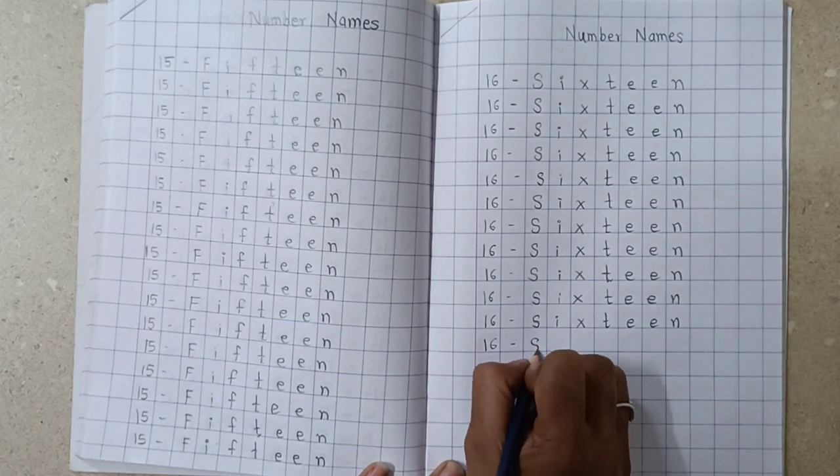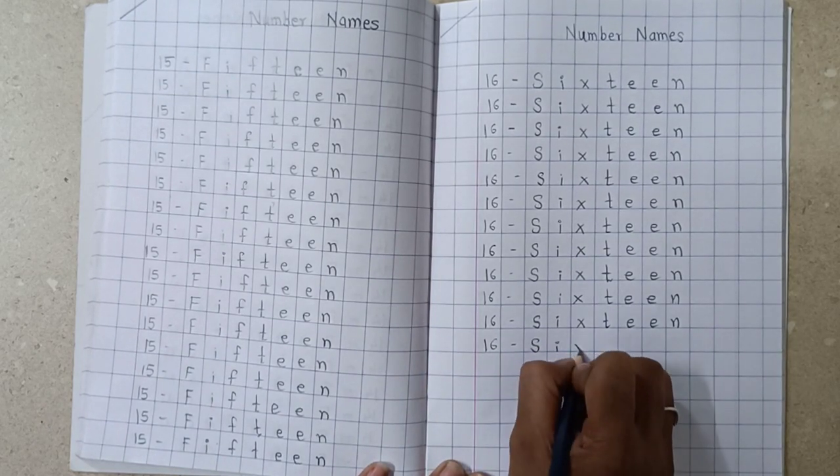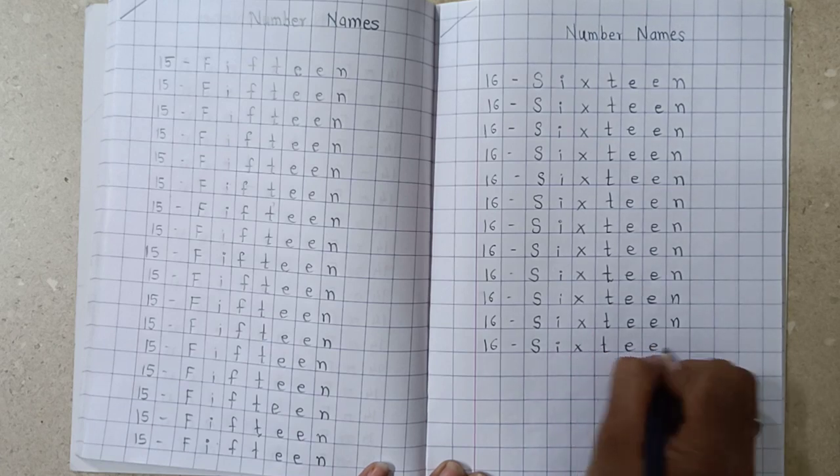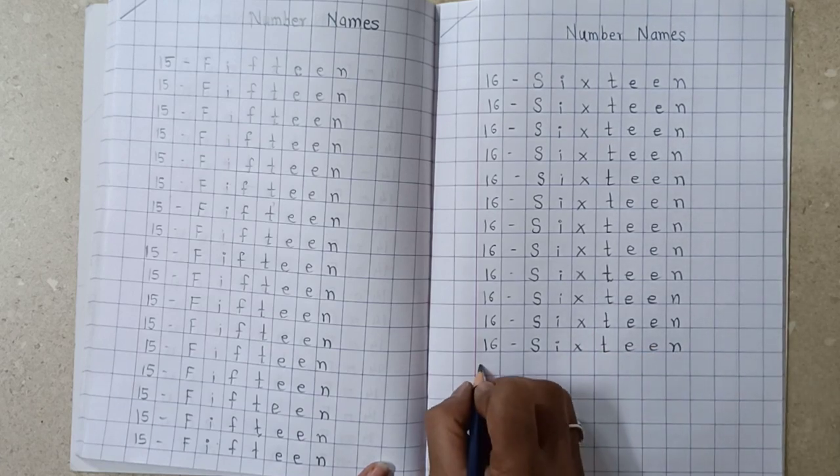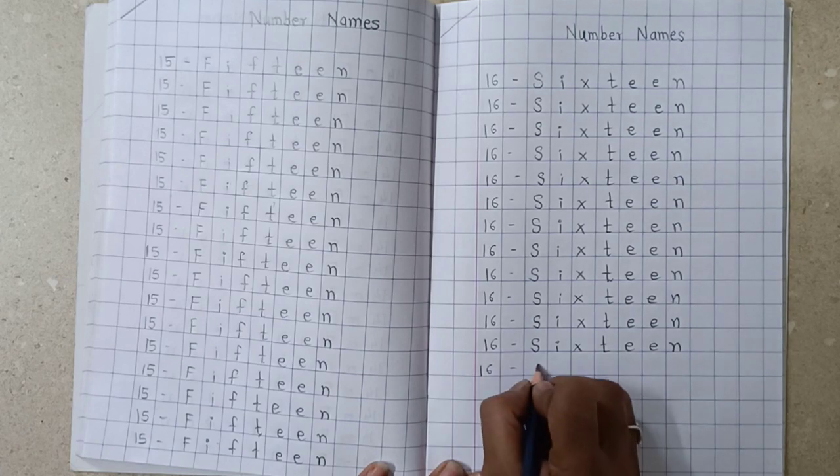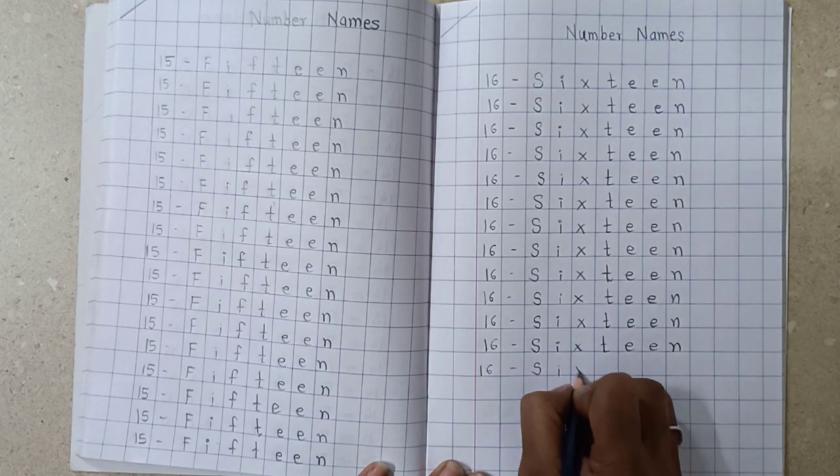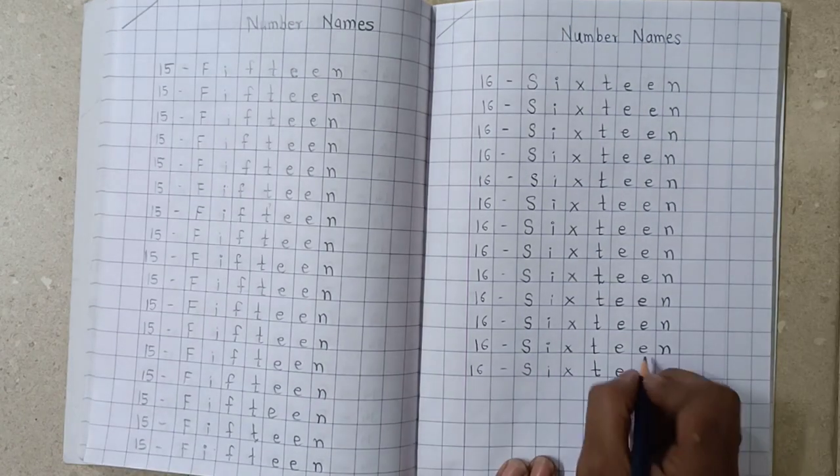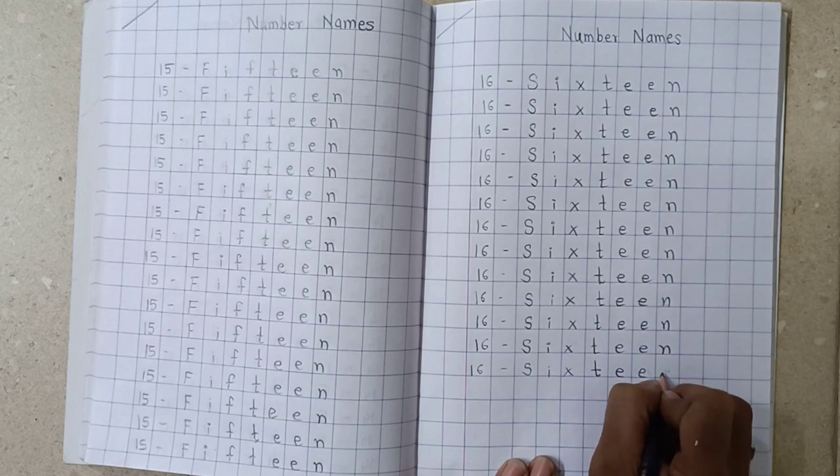Students, you have to write it very properly in a good handwriting, okay? First, you have to sharp your pencil, then you have to write the number names, okay students? S-I-X-T-E-E-N, 16.